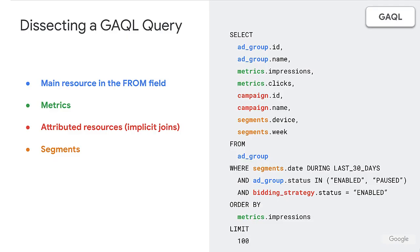I think the easiest way to really understand GAQL and how it works is to just dissect an interesting query. And before we do, I just want to point out the color coding on the slide so it's not confusing — I don't want you thinking about the color coding; I want you thinking about how this query language actually works.